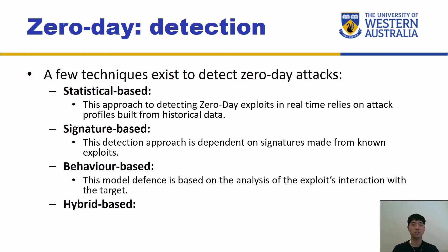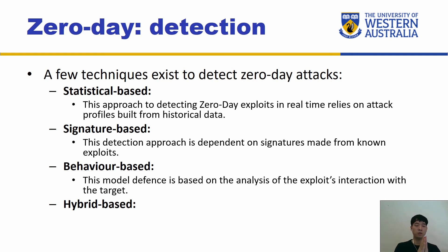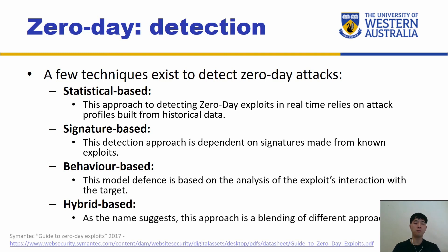Behavior-based detection is quite different — it's based on the analysis of an exploit's interaction with the target. For instance, when malware runs on a system it has to do some activities: you can trace system calls and what kind of APIs they call, and try to match that to malicious behavior already identified. Or you define normal activities, monitor what applications do, and if something is flagged it can be identified as malicious. Finally, hybrid-based detection blends different approaches. The pros are that you look at many different aspects of the malware, but the cons are that you have to implement all those techniques, which can be costly and time-consuming.